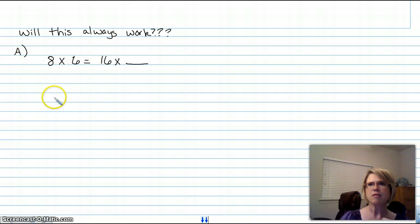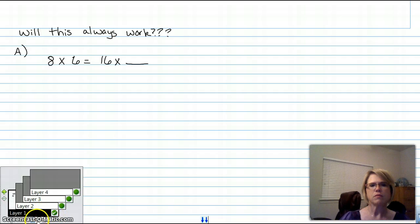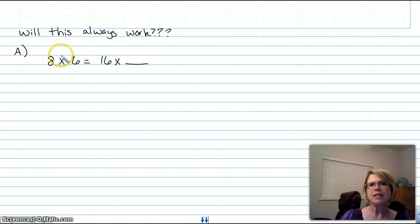First question I have for you is 8 times 6. We know that that's 48, right? I want you to think about it and pause the video if you need to. 8 times 6 is equal to 16 times something. I want you to take a look at possibly, what did I do to 8 to get to 16? How did I go from 8 to 16? Hopefully, you're saying that's doubled. So, in order to keep the problem the same, what would I have to do to 6 to keep that equation balanced? And hopefully, you're saying, I would need to divide by 2. And so, this answer must be 3. So, does 8 times 6 equal 16 times 3? And the answer is yes.